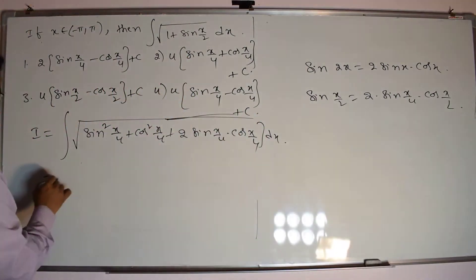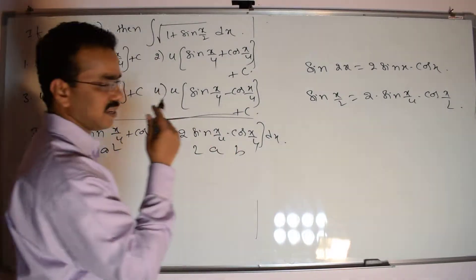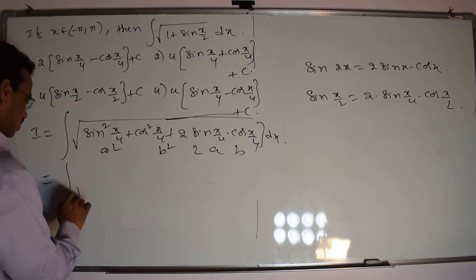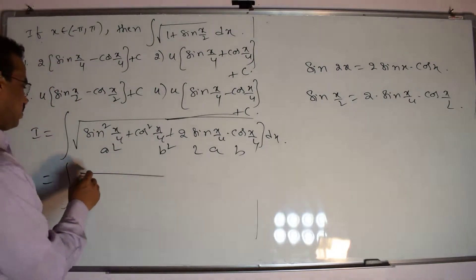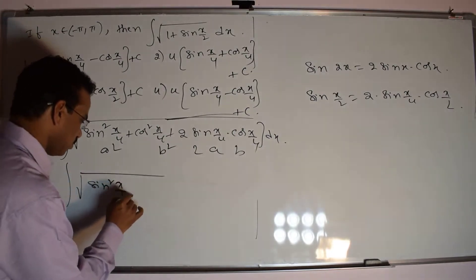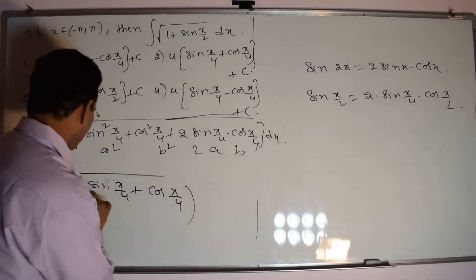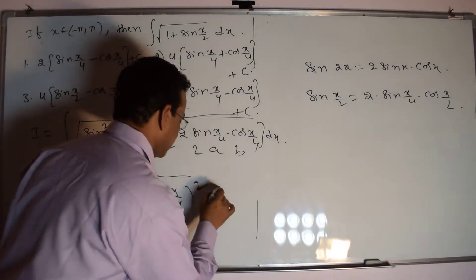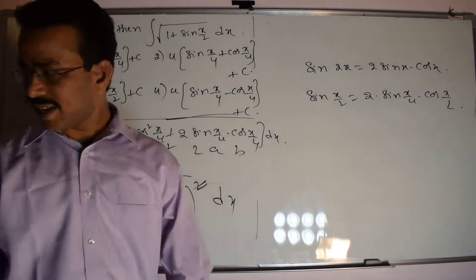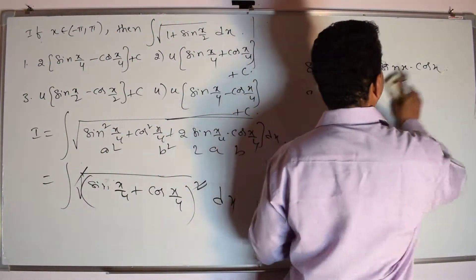Inside the square root, this is a² + 2ab + b² form, which equals (a + b)². So we can write it as the integral of square root of (sin(x/4) + cos(x/4))² dx. The square root and the square cancel, giving us the integral of (sin(x/4) + cos(x/4)) dx.